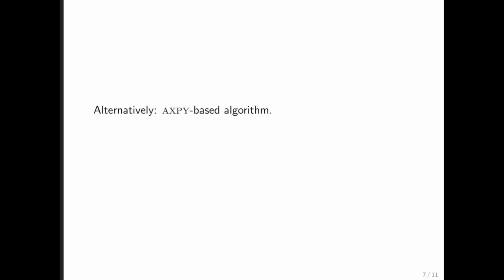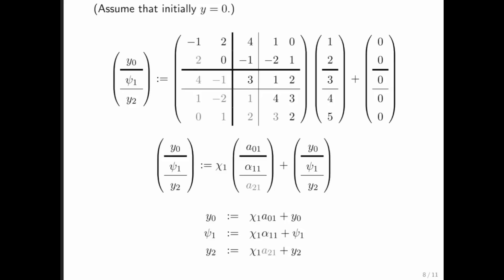What if we look at the AXPY-based algorithm instead? Here we have it again. And notice that when we use the AXPY-based algorithm, we take this element of x, multiply it times this column of A, and add it to what's being accumulated in y. So that gives us this right here. But notice that this part here is not actually stored.